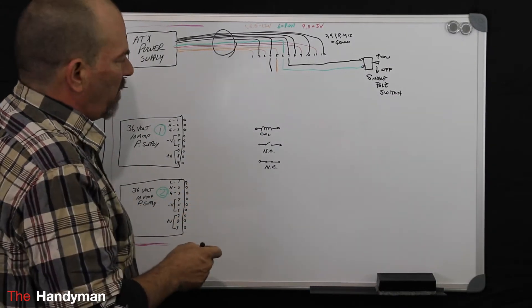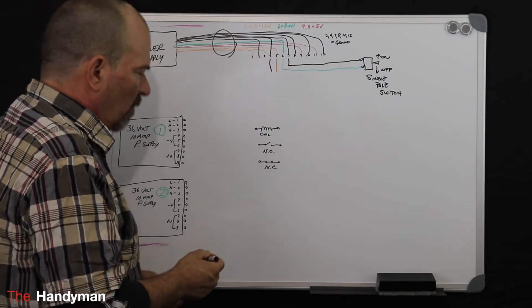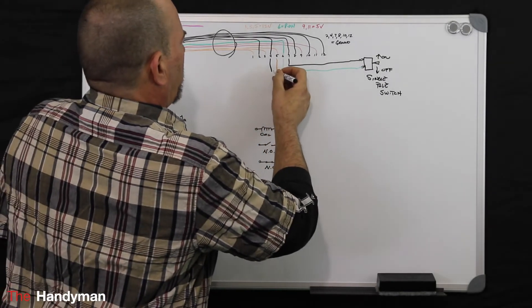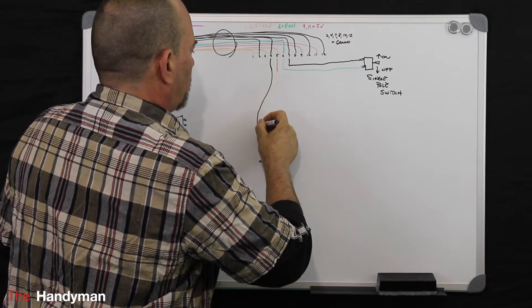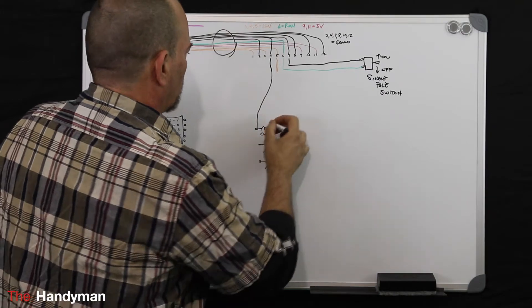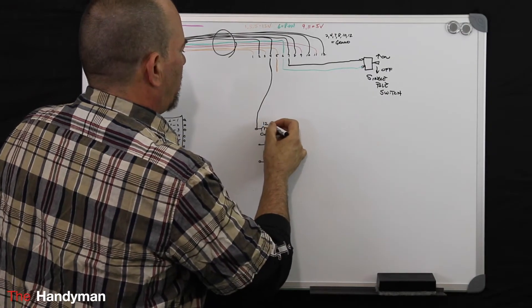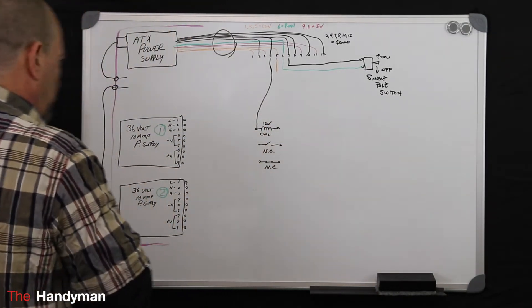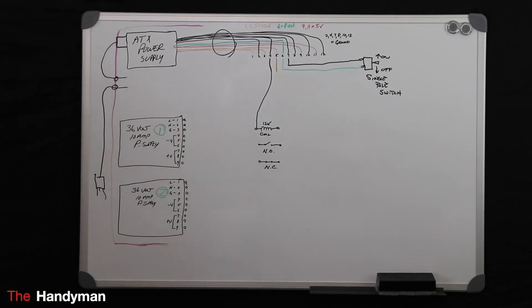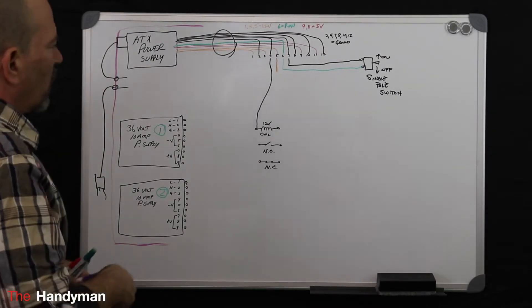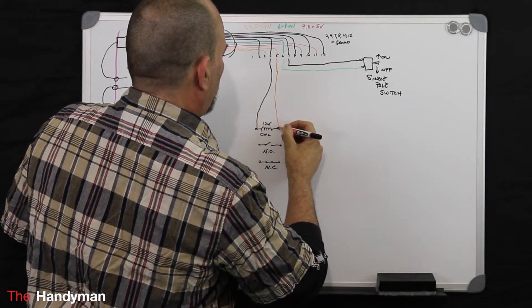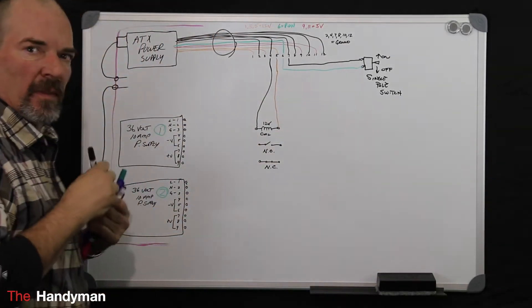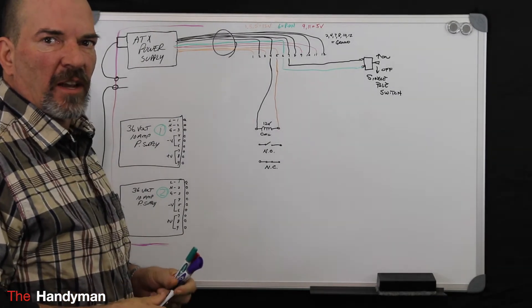So the first thing we want to do, we'll go back to our drawing, is you've got to bring your 12 volts down to your coil because this is a 12 volt coil if you recall, and then take your positive down to your coil. Alright, so our coil is out of the way.